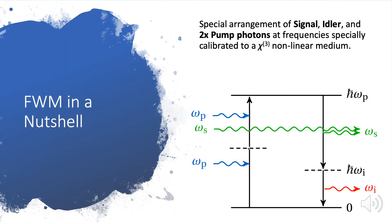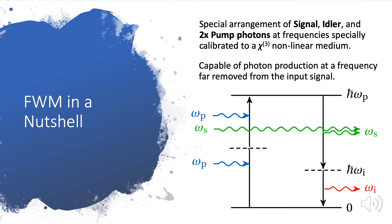Four-wave mixing in a nutshell: it's a special arrangement of signal, idler, and two pump photons at frequencies that are specially calibrated to a chi-3 nonlinear medium. It's capable of photon production at a frequency far removed from the input signal.